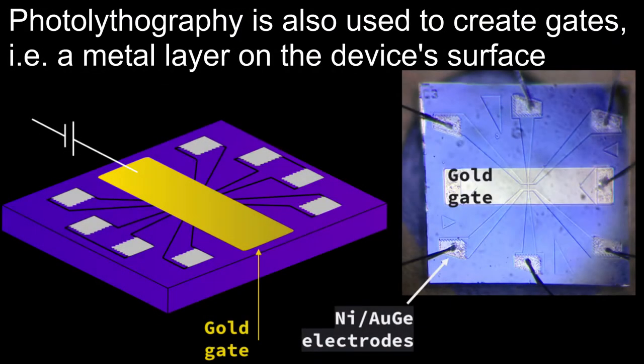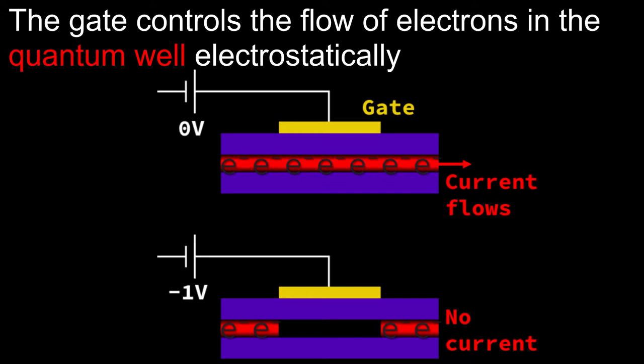In addition to electrodes, we use photolithography to create metal gates on the device. A gate is a layer of metal on the device surface to which we apply a voltage. The electric field generated by the gate affects how much current can flow in the quantum well underneath it.